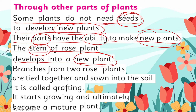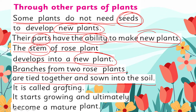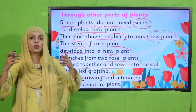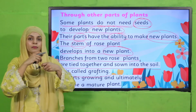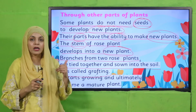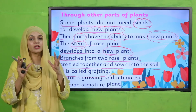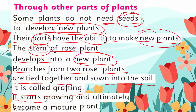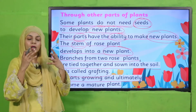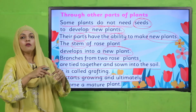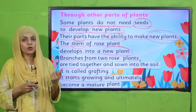The stem of a rose plant develops into a new plant. If you take a stem — these are called cuttings — of a rose plant and put it into the soil, it will grow into a new rose plant. Branches from two rose plants are tied together and sewn into the soil; this is called grafting. If you take branches of two separate rose plants, join them together, tie them, and put them into the soil, this is called grafting. They will ultimately grow and become a mature plant.